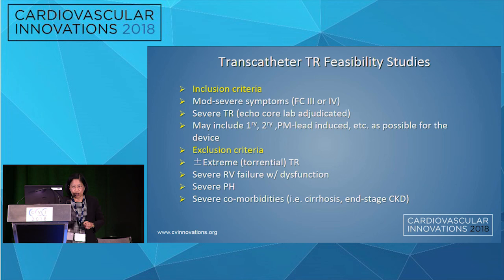There are surrogates of severe TR that seem fairly robust and make pathophysiologic sense, and then symptoms — but guideline-directed medical therapy is limited, which opens the door for transcatheter procedures. Endpoints will include efficacy from TR reduction and echo parameters of RV remodeling, as well as hard endpoints and functional endpoints.